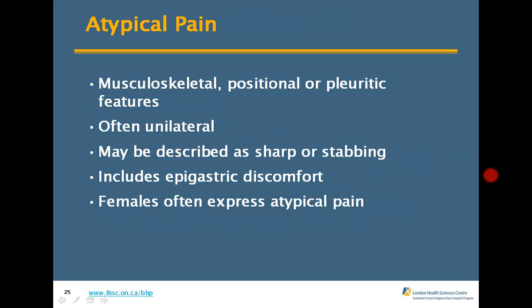Atypical chest pain has musculoskeletal, positional, or pleuritic features. It's often unilateral and may be described as sharp or stabbing. It includes epigastric discomfort. Females often express chest pain as atypical, and there's usually something else involved — like diabetes or another underlying illness. These patients also fall within the ACS spectrum and should be treated as such.